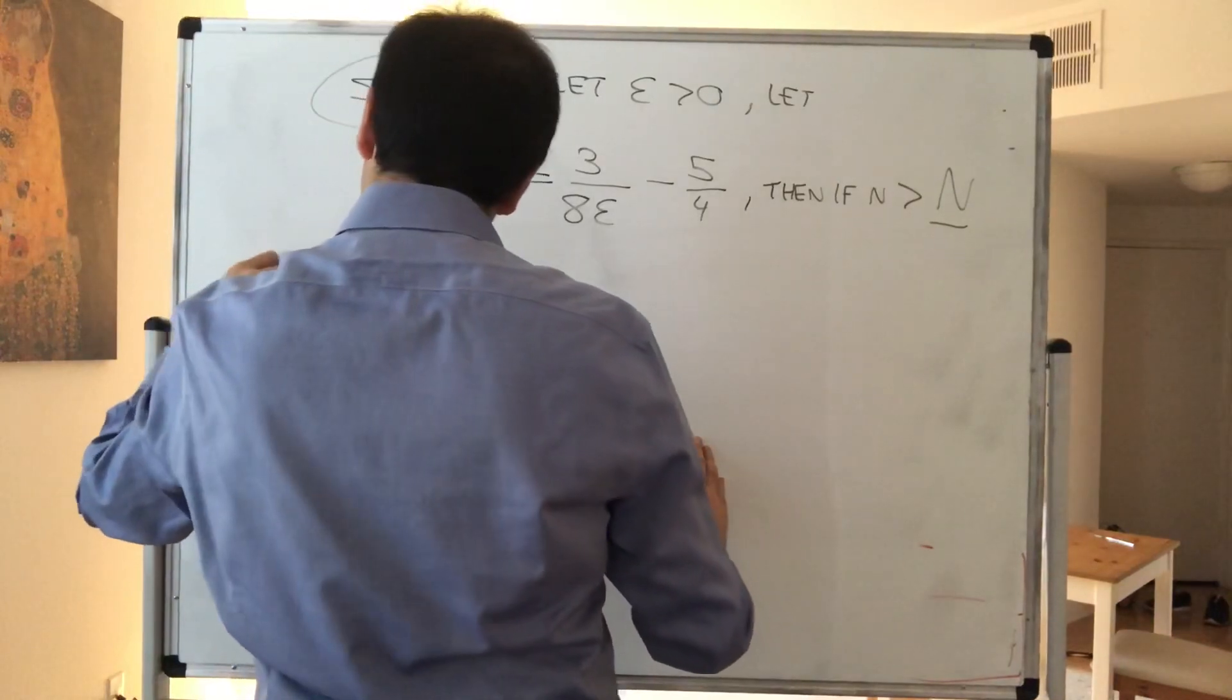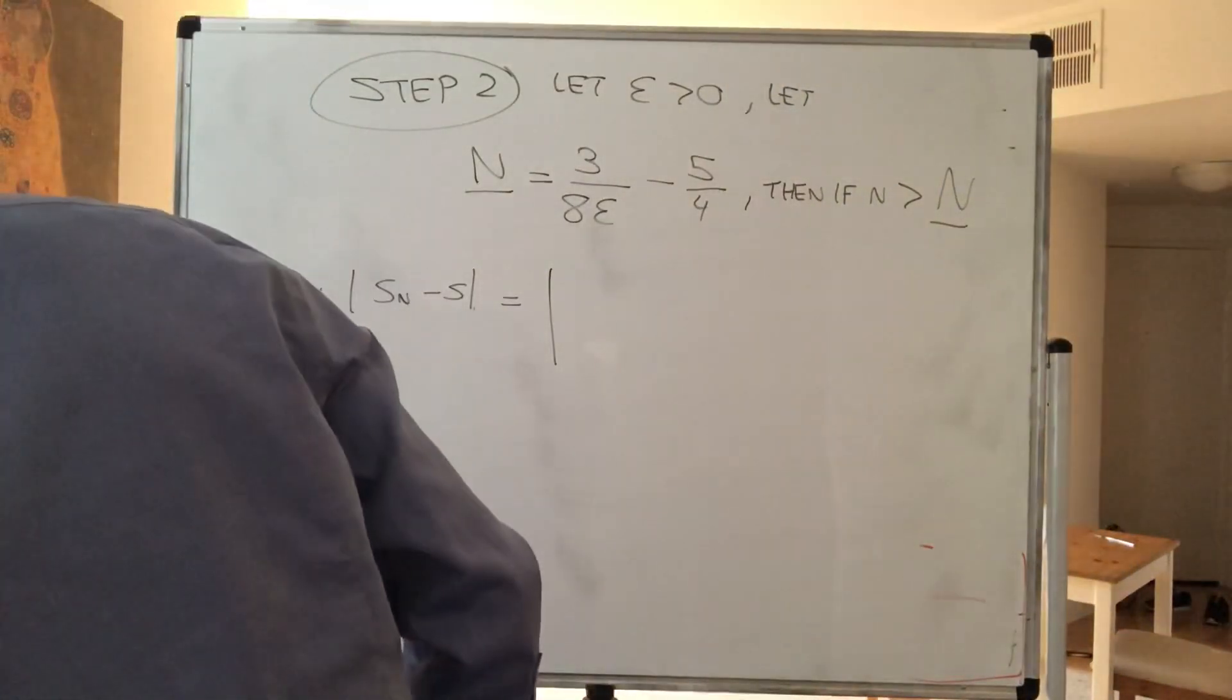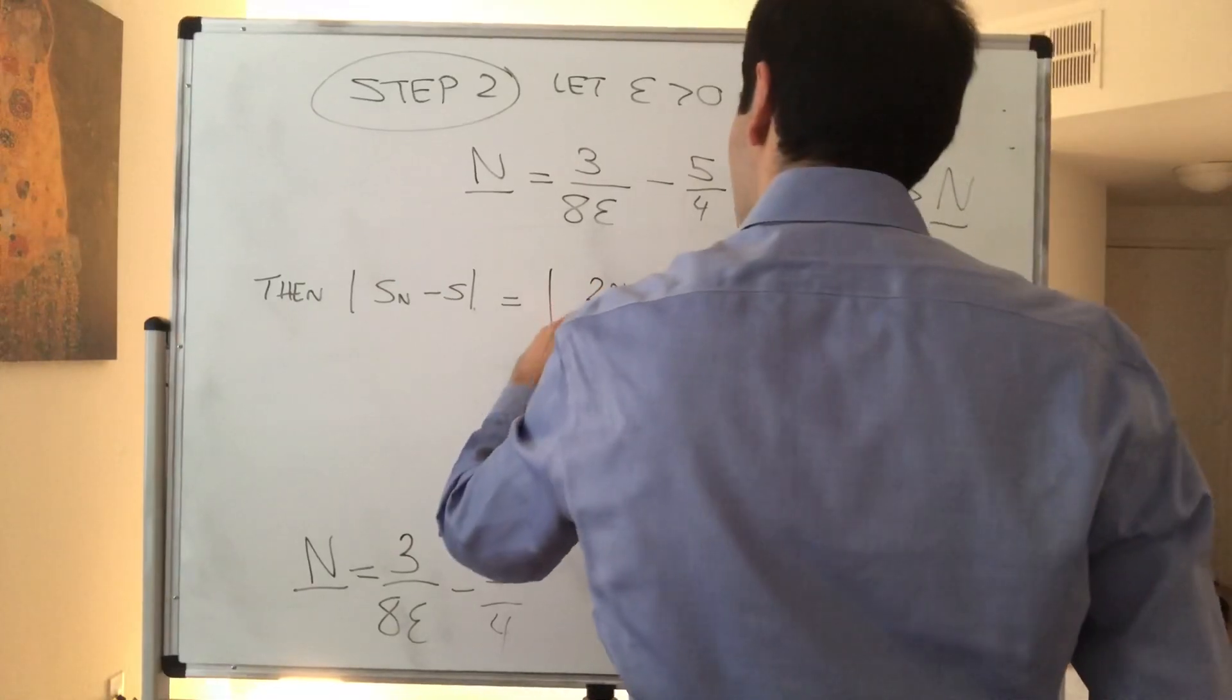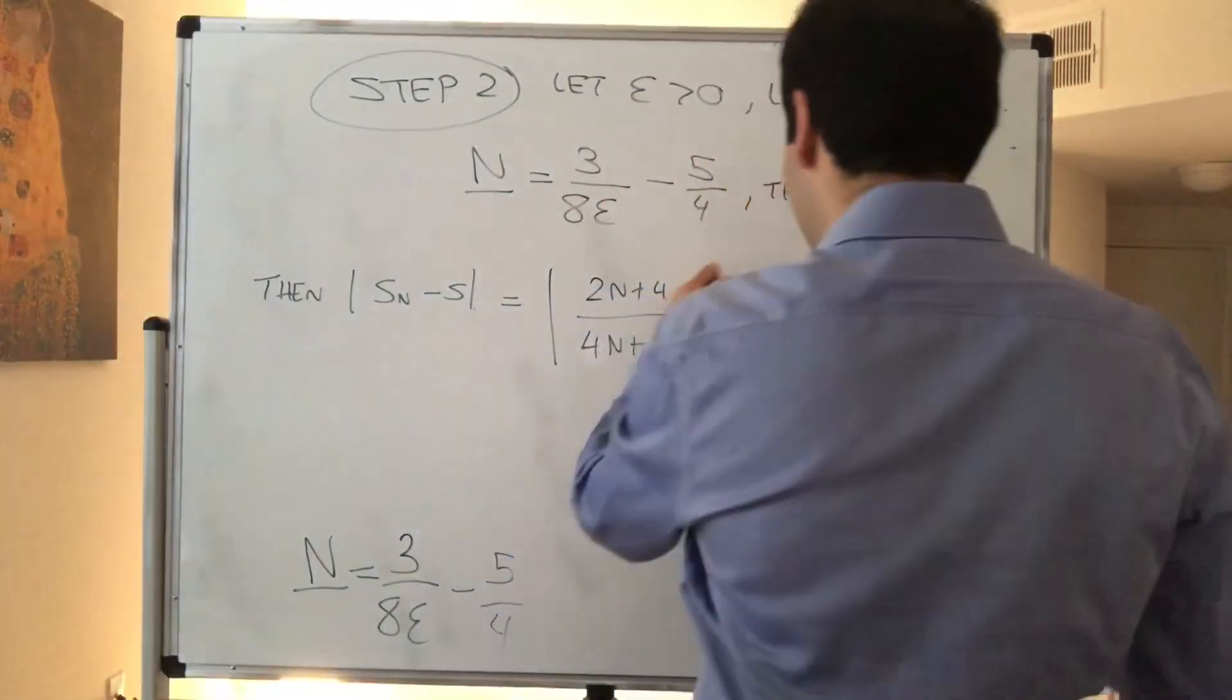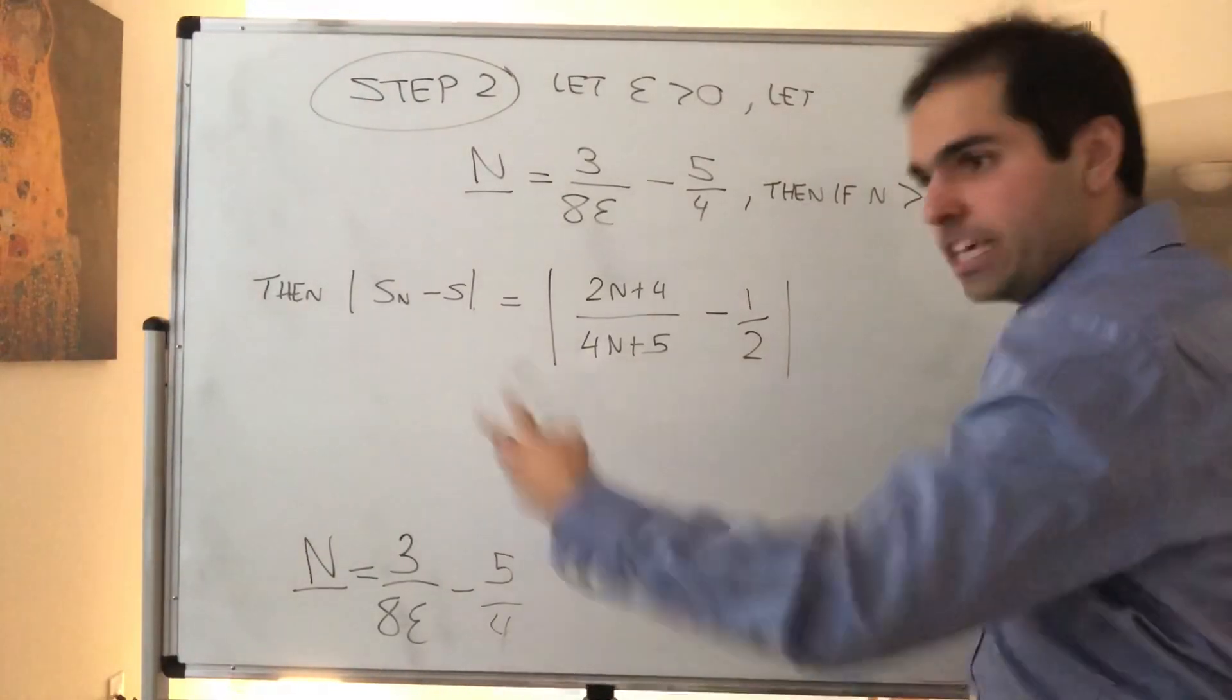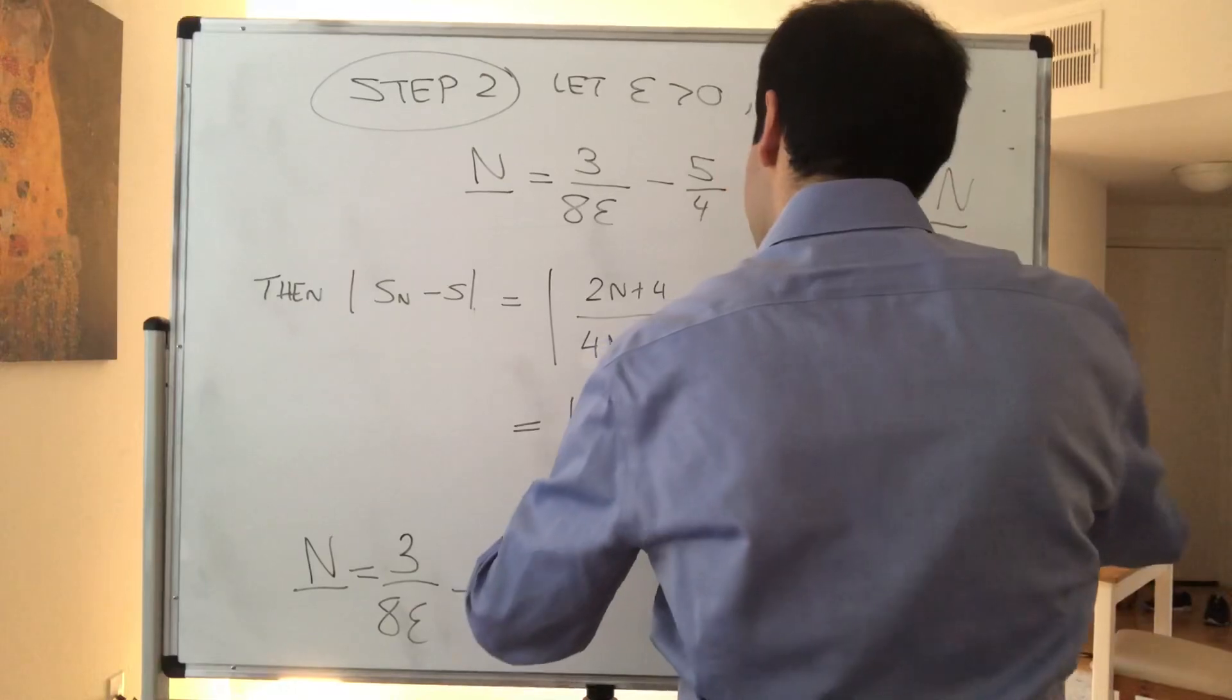then take that difference, so SN minus S, and again, becomes a difference between your sequence and your limit. So, I think it was 2N plus 4 over 4N plus 5, and then minus 1 half. Because everything was an equality before, it's okay to skip your steps in this case, and just write this as 3 over 2 times 4N plus 5.